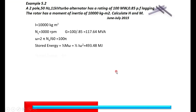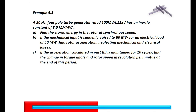Now we have Example 5.3. The statement is: a 50 Hz, 4-pole turbo generator rated 100 MVA, 11 kV, has an inertia constant of 8 MJ per MVA. We are asked to calculate the stored energy in the rotor at synchronous speed, and the acceleration if the mechanical input is suddenly raised to 80 MW for an electrical load of 50 MW. Find the rotor acceleration, neglecting mechanical and electrical losses.